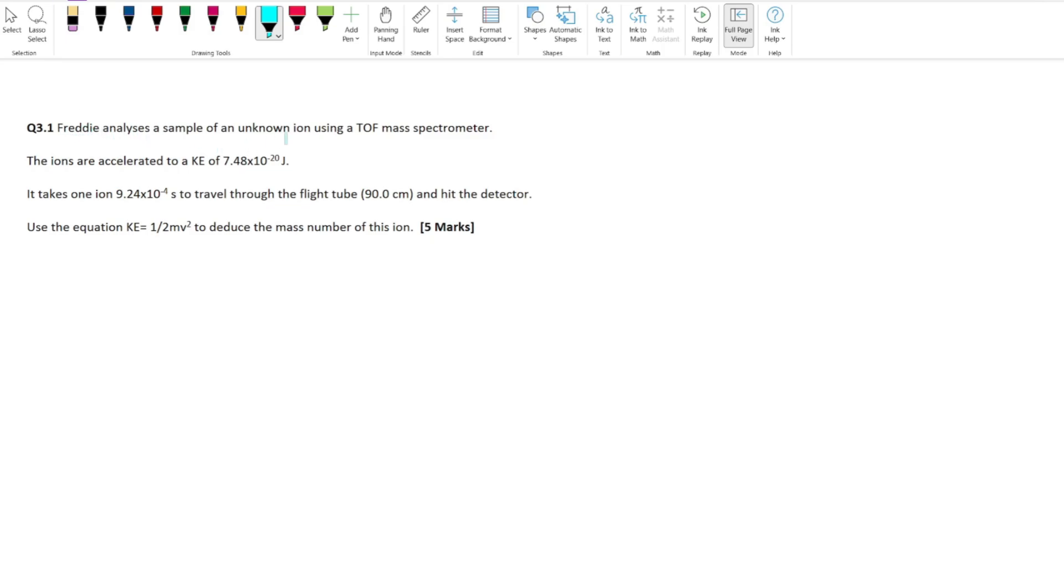Freddie analyzes a sample of an unknown ion using TOF mass spec. The ions are accelerated to a kinetic energy of 7.48 times 10 to the minus 20 joules. It takes one ion 9.24 times 10 to the minus 4 seconds to travel through the flight tube, which has a length of 90 centimeters. Use the equation KE equals half mv squared to deduce the mass number of this ion.